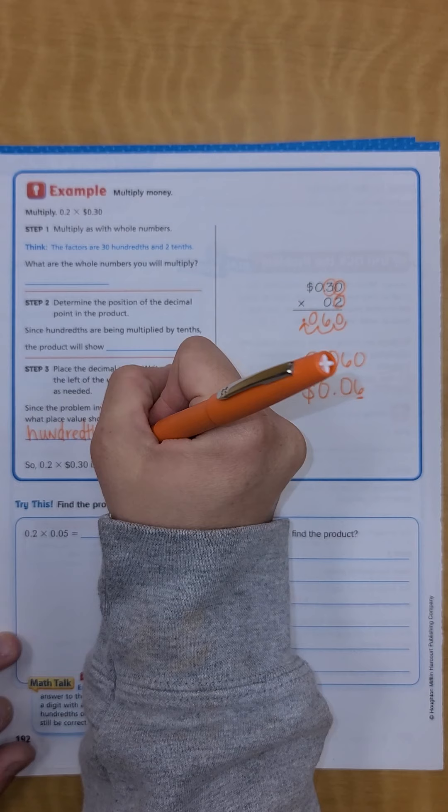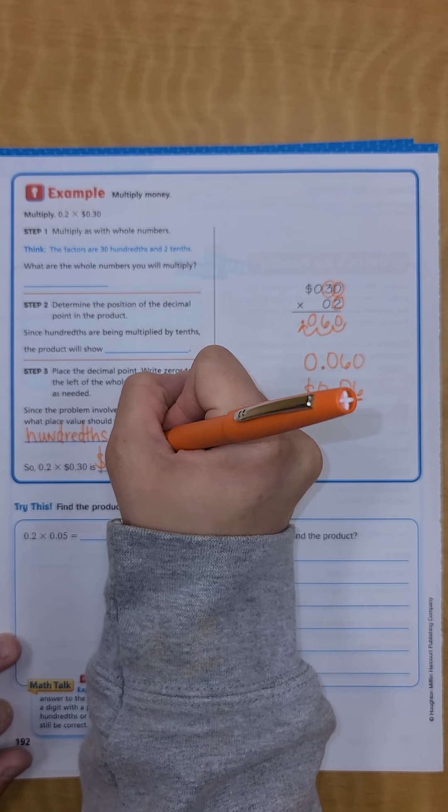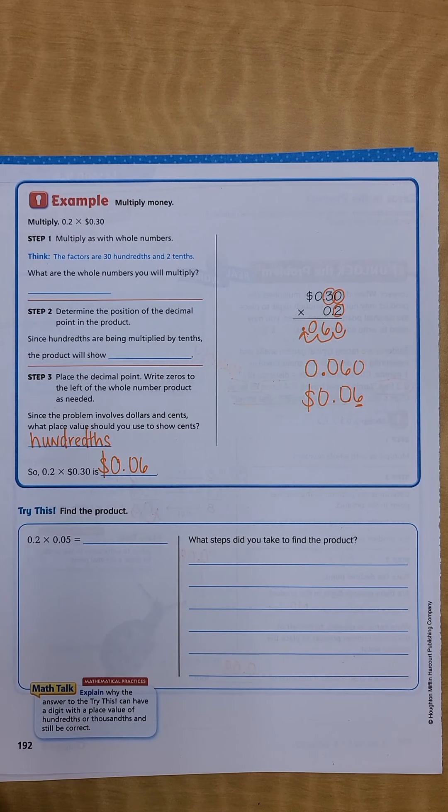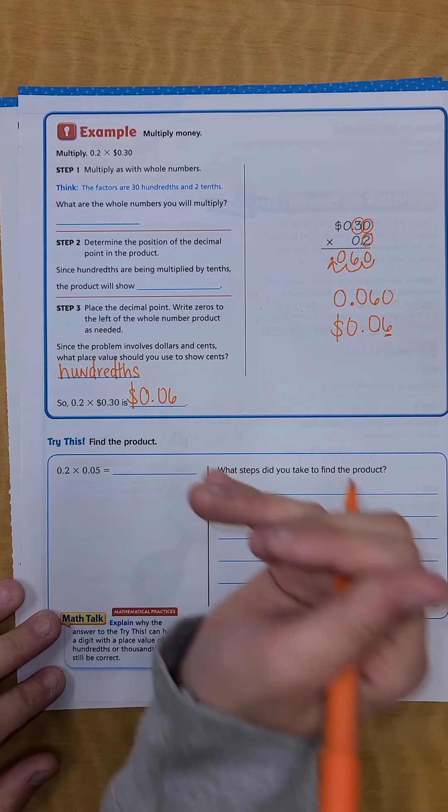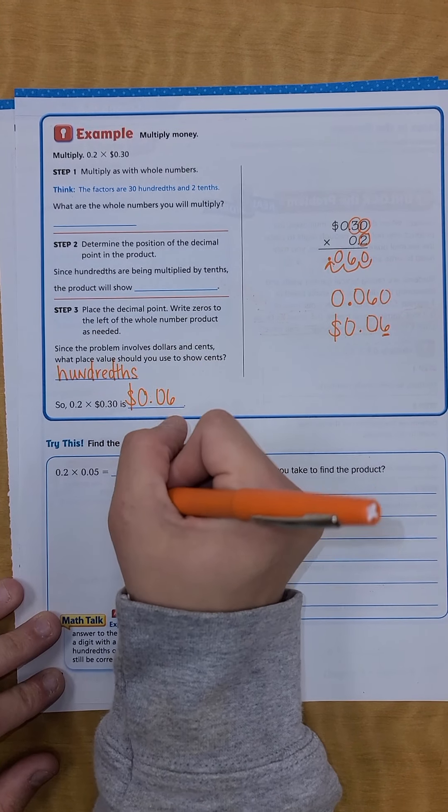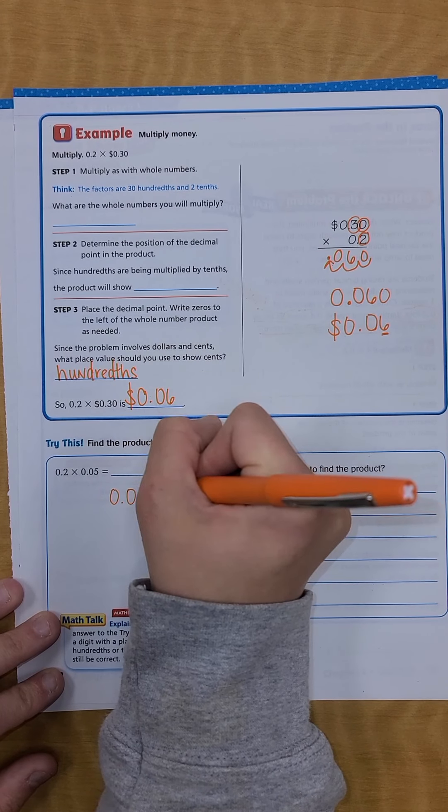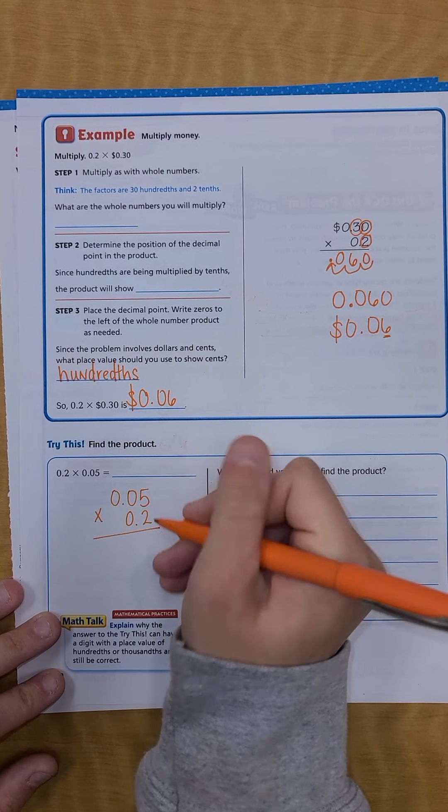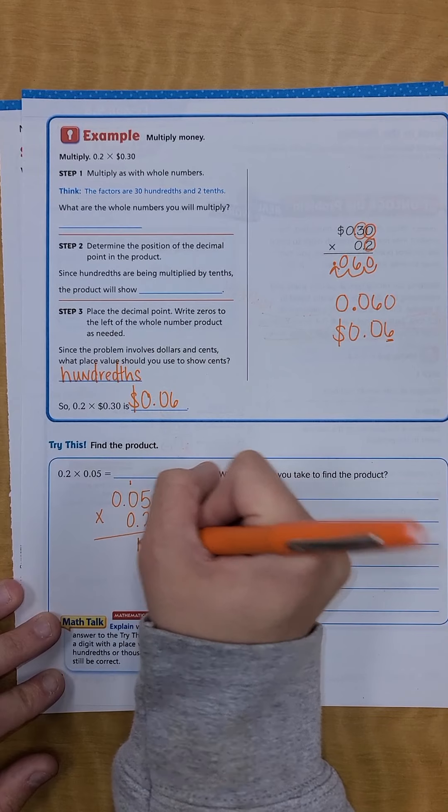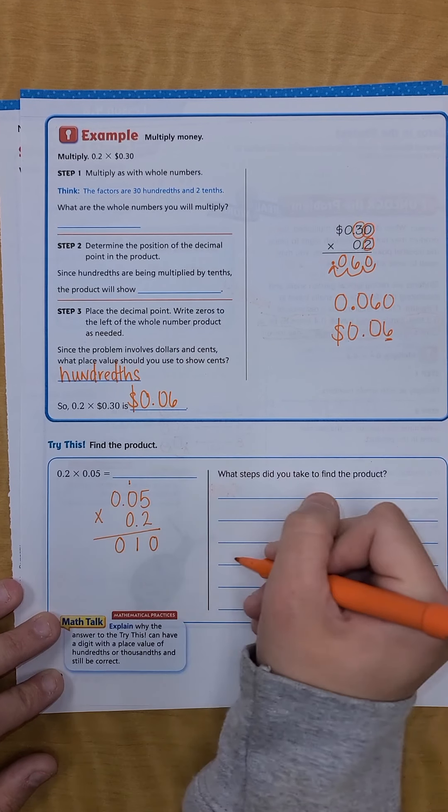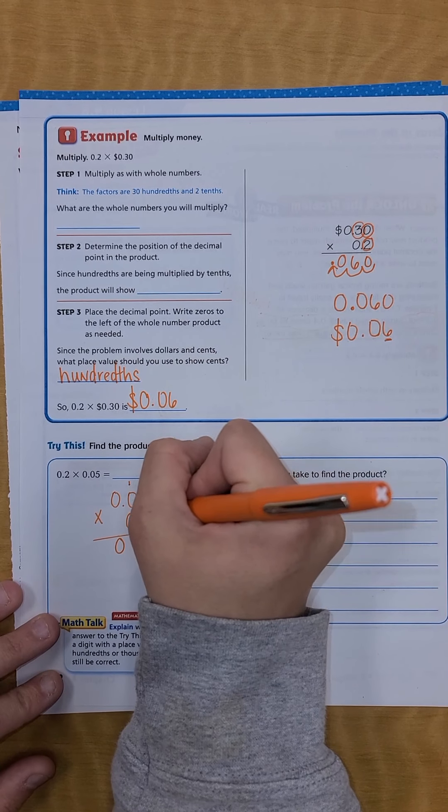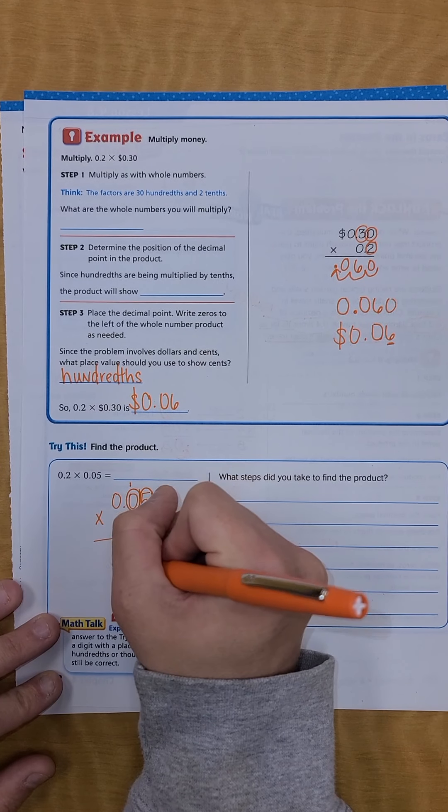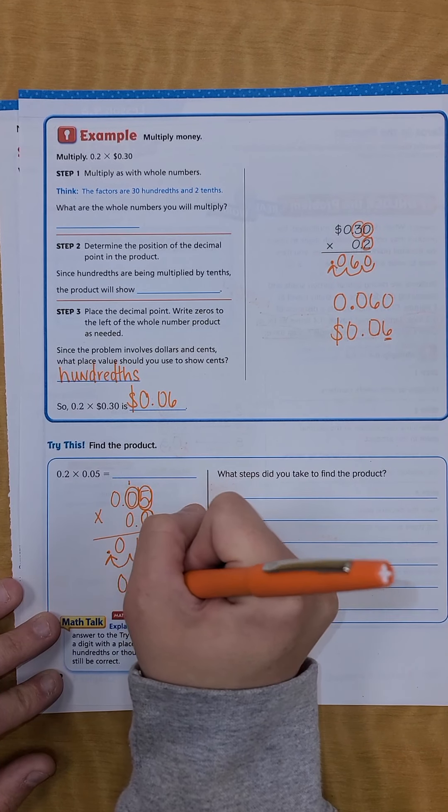If I multiply 0.2 times thirty cents it would give me six cents or six hundredths. All right, so this next one we're gonna go ahead and set it up. I'm gonna have 0.05 times 0.2. Two times five is ten, that's one, that's zero, and I don't have to do the next row because it's just gonna be zero.